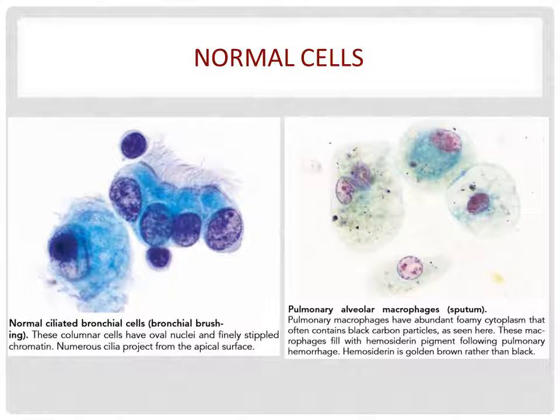Now let's look at the respiratory cell morphology, starting with normal cells. The first image shows normal ciliated bronchial cells from bronchial aspirations. If you look at the cells, they have oval nuclei and numerous cilia at the apical surface. For the right image, it shows pulmonary alveolar macrophages obtained from sputum. These cells have abundant foamy cytoplasm and also contain black carbon particles.